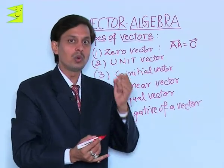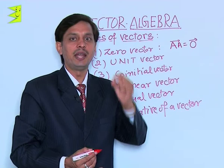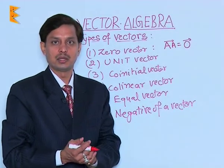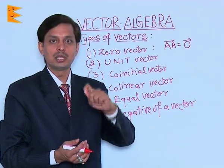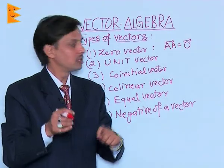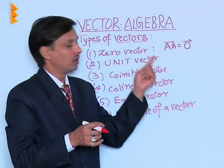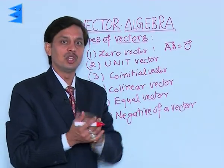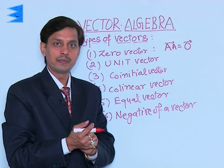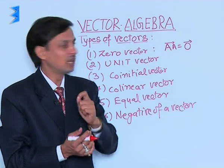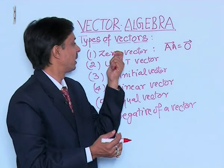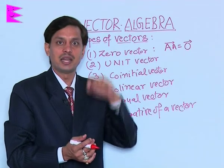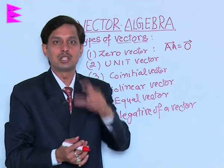You need to understand that the position vector is the terminating position minus the initial position. With the help of this, we can explain what a zero vector is — a vector that starts and ends at the same point.